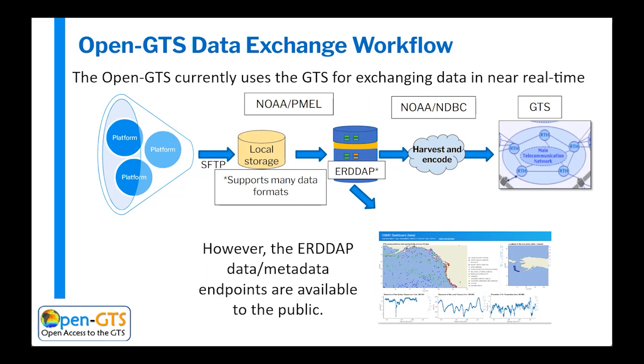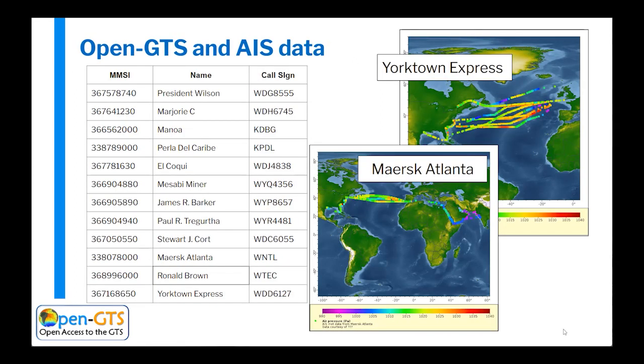Here are just a couple of examples of platforms that we've been working with. This is actually AIS data — meteorological data collected by AIS systems on ships — and this is an incredibly rich source of potential data to include in these operational forecasts, as not much of this data is actually making its way through the operational systems.